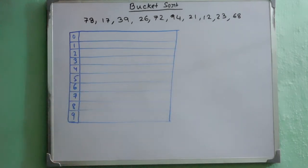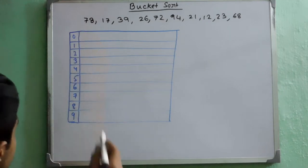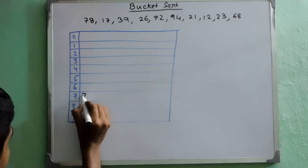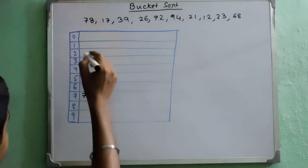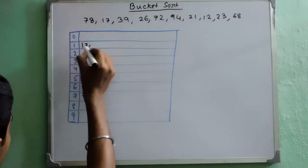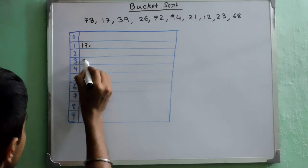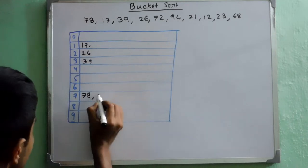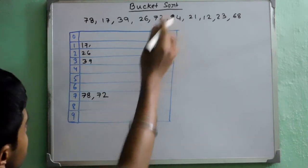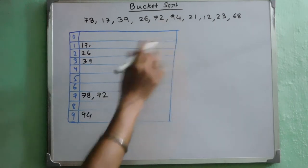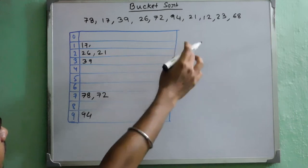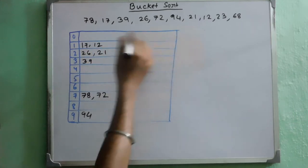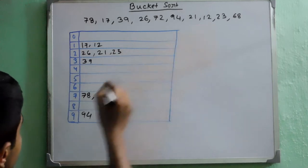Now what we will do? We will see that the numbers fall under which bucket. The first one is 78. It falls under the bucket number 7. Then 17 which will come under bucket 1. Then we have 39 which will fall here. Then we have 26 which will come here. Then we have 72, then 94, then 21, then 12, then 23, and finally we have 68.